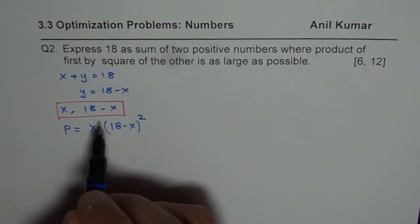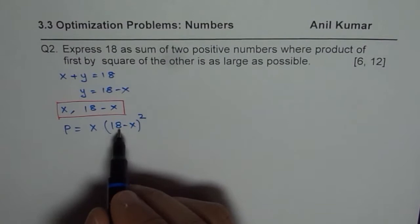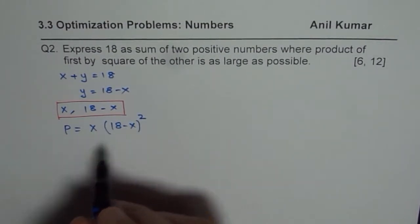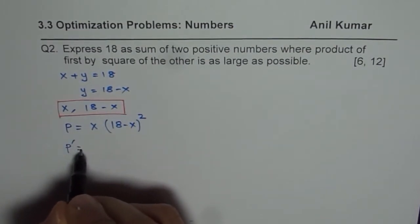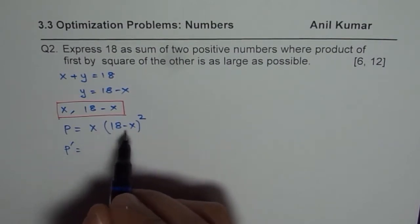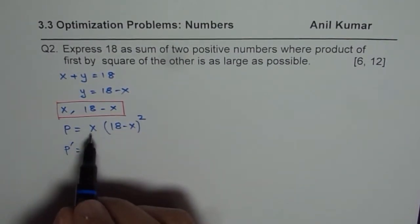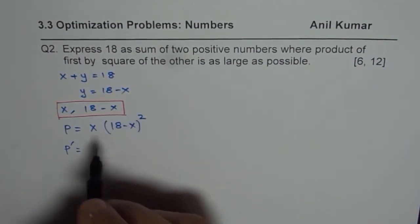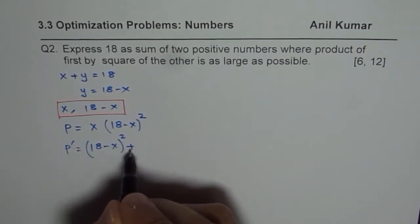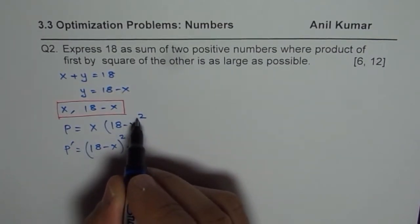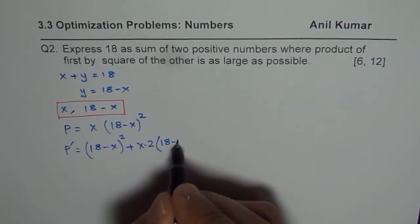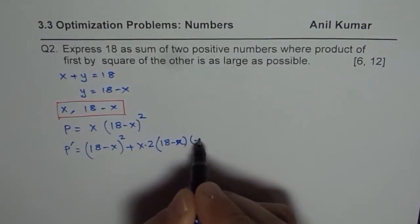Now we can either expand this or apply the product rule. We will find the derivative with respect to x and apply the product rule. Product rule says derivative of first times the other which is 18 minus x whole square plus first number times derivative of the second which is 2 times 18 minus x times minus 1.